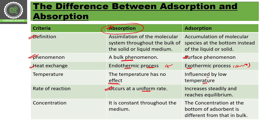Regarding rate of reaction: in absorption, it occurs at a uniform rate. But in adsorption, the rate increases steadily and reaches some type of equilibrium. Regarding concentration: in absorption, the concentration stays constant throughout the medium. But in adsorption, the concentration at the bottom of the adsorbent is different from the bulk — concentration zyada hogi at the bottom as compared to the rest. So yeh basic difference hai adsorption aur absorption mein.